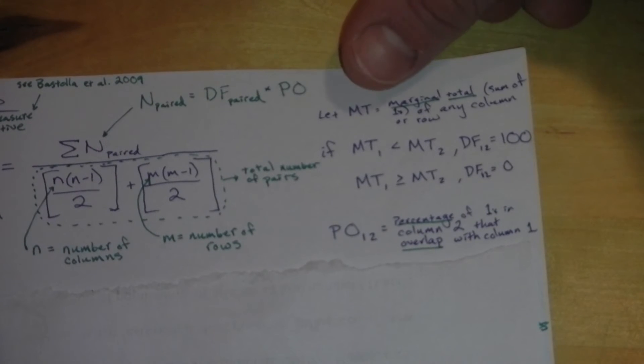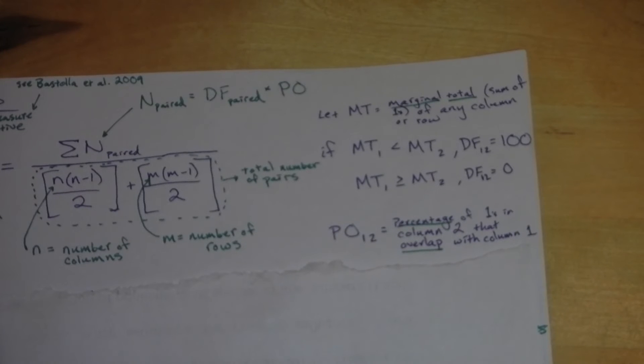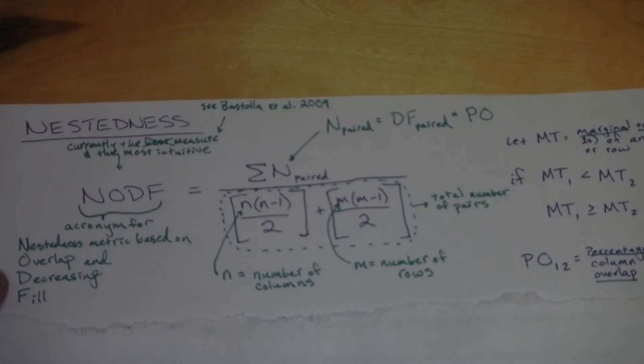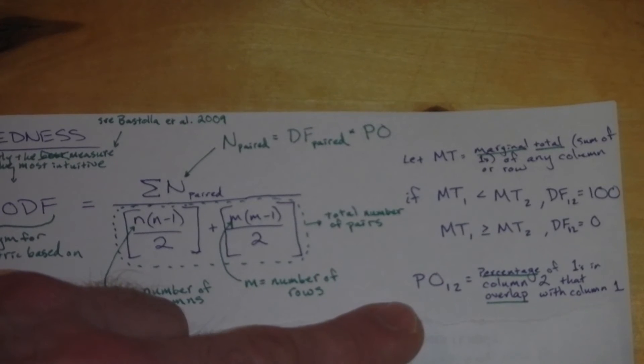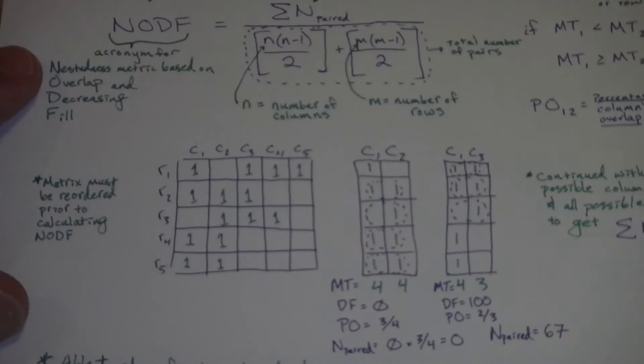So we're going to talk about this value of MT. So MT is a marginal total of the sum of any column or row. Essentially for this value, if MT1 of the first row or column is less than the other column that's being compared to, then the degree of fill or decreasing fill is given a value of 100. If, however, the marginal total of any column or row is greater than or equal to the other row, then it has a value of zero, because it's not meeting that criteria of having decreasing fill. That's what the DF paired stands for. Percentage overlap is essentially the percentage of ones, so we're dealing with a qualitative bipartite network that are in column two that overlap with column one. So I've said a lot of things and it's probably not making any sense yet. So let's go to an actual matrix.